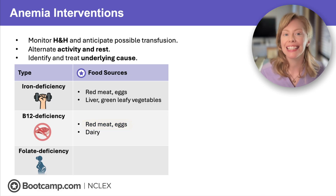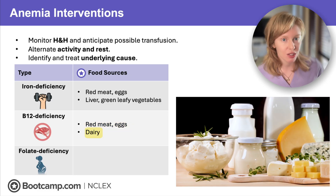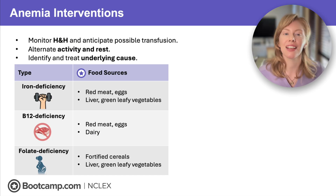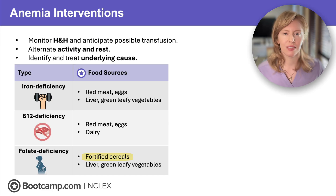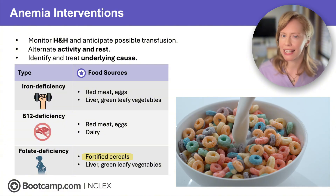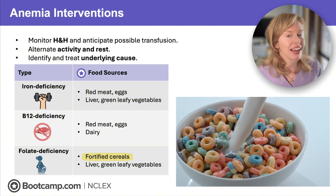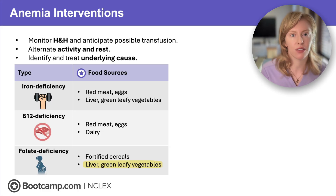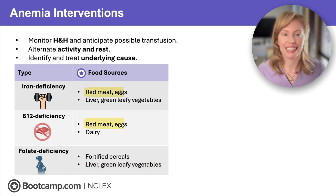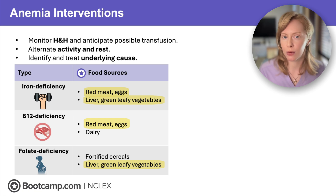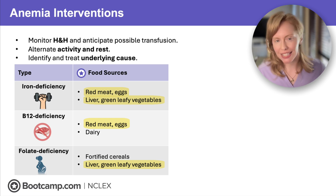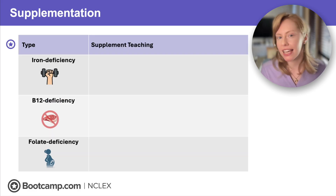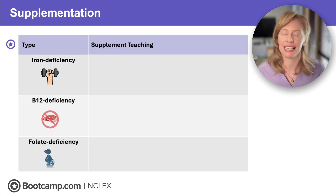B12 is also found in 'the blood and the baby' — red meat and eggs — as well as in dairy, which is also meant for the baby. Folate deficiency is not as big of a problem in the US as it used to be because our cereals are now fortified with folate — that's why your breakfast cereal might smell like a multivitamin. Folate can also be found in liver and green leafy vegetables. So red meat, eggs, liver, or green leafy vegetables on an anemia NCLEX item is a safe bet to treat at least one type of anemia.